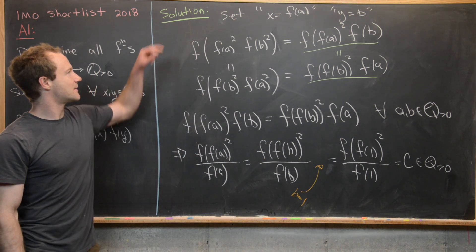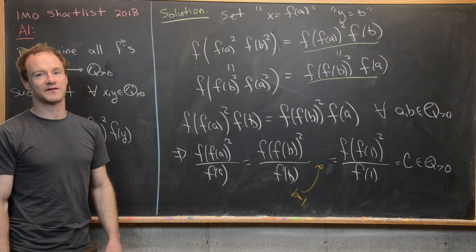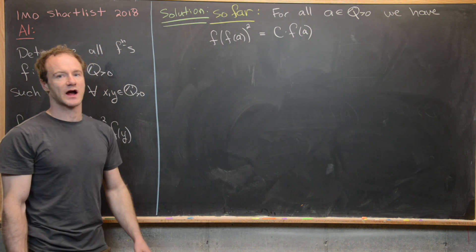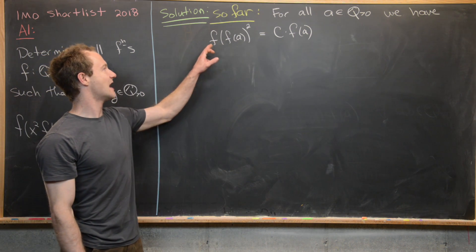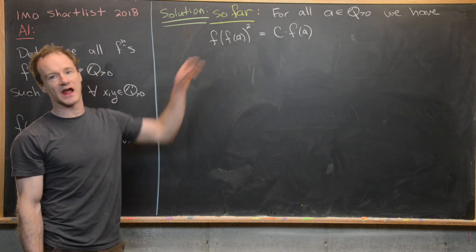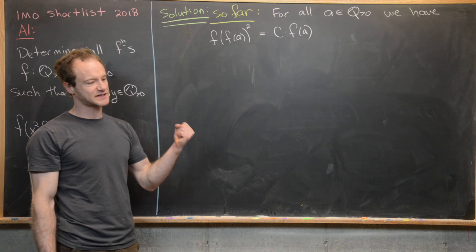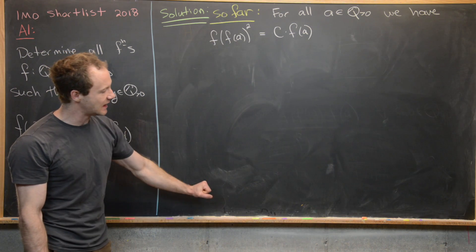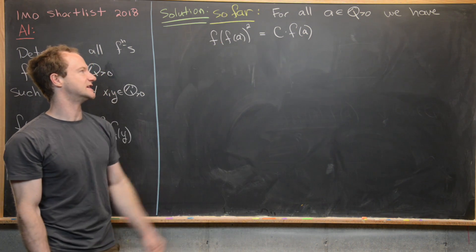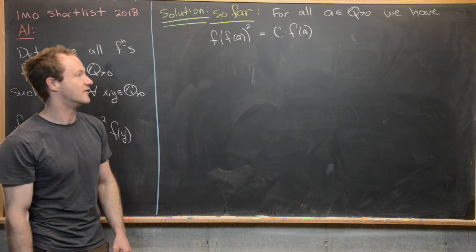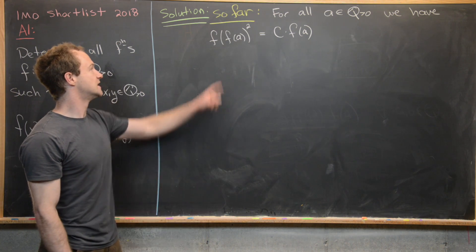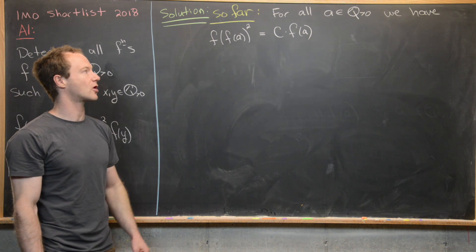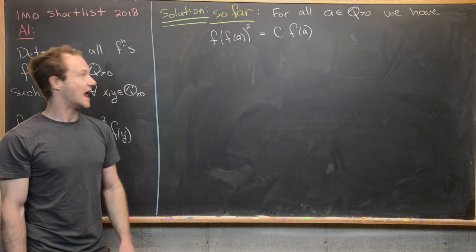So we've arrived at the fact that for all positive rational numbers a, f((f(a))²) / f(a) = c, where c is some positive rational constant. Multiplying both sides by f(a) gives us f((f(a))²) = c · f(a), and this is true for all positive rational numbers a.